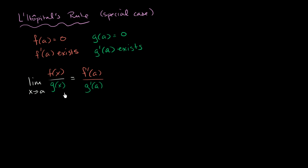So it's very similar to the general case, just a little bit more constrained. We're assuming that f prime of a and g prime of a actually exist — we're not just taking the limit. Notice that if we substitute a, we get 0 over 0. But if the derivatives exist, we can just evaluate them at a to get the limit.